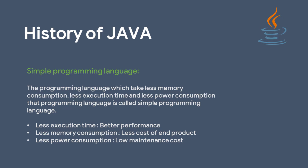Now the third feature inside 'simple programming language' is less power consumption. We need hardware to execute our program. If the software takes a lot of power, it takes a lot of resources, which increases the maintenance cost of the system. If the programming language takes less power consumption — less resources — then system maintenance costs will be reduced and become negligible.